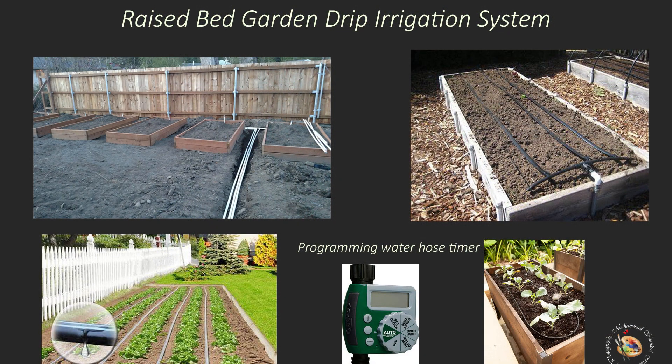Installing a computerized drip irrigation system for vegetable gardening offers numerous advantages: water efficiency, consistent watering, automated convenience, even distribution of water, reduced weeds and disease, healthy plant growth, time and labor savings, and flexibility and customization. Overall, a computerized drip irrigation system optimizes water use, promotes healthy plant growth, and simplifies the gardening process, making it a valuable investment for vegetable gardeners of all experience levels.